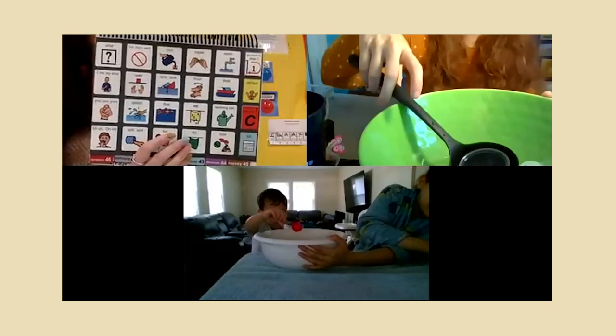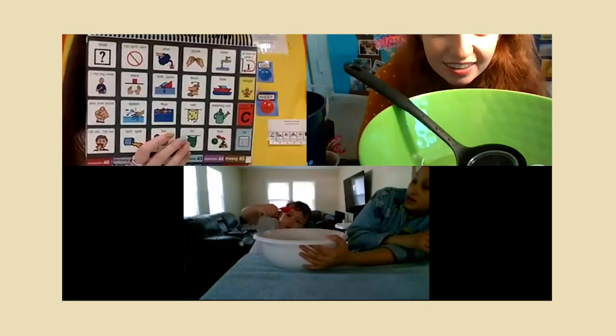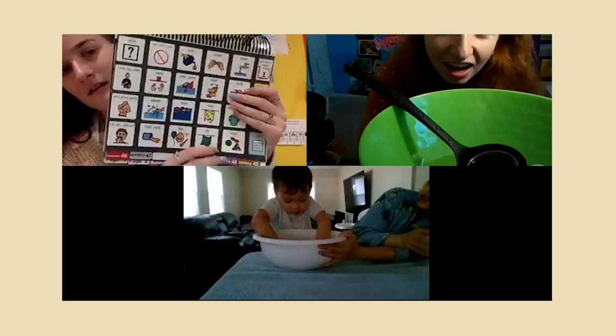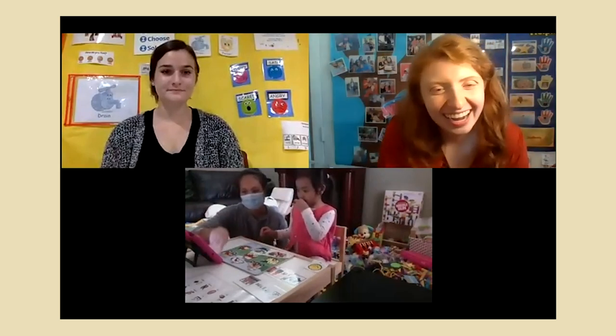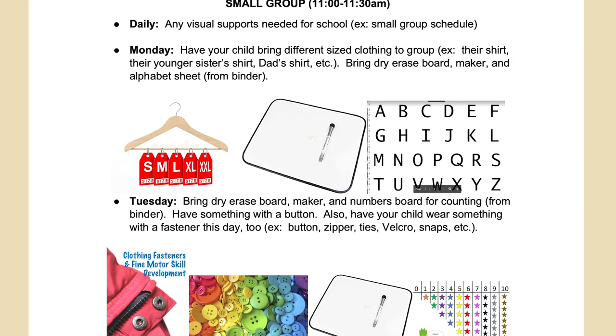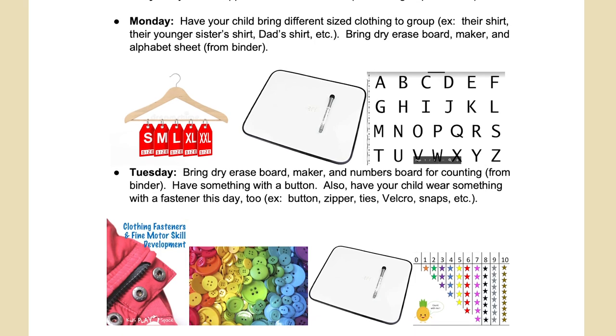It's based on what kids are going to like and how we can embed that into sessions to work on their goals. At the beginning, I asked parents what their child really likes — they answered things like play-doh, water play, cars, puzzles. I take the time to think about what materials they have and what toys they like at home that we can bring to the screen. I send a newsletter each week with what's needed, including pictures of all materials, so families see exactly what's expected.